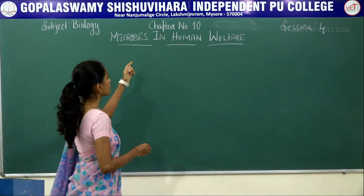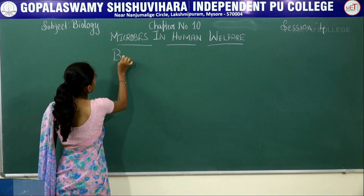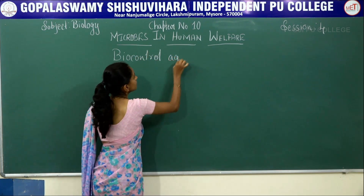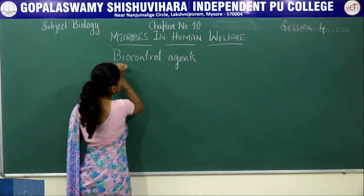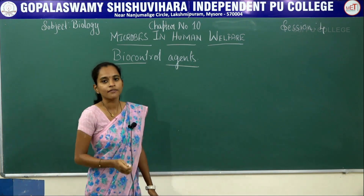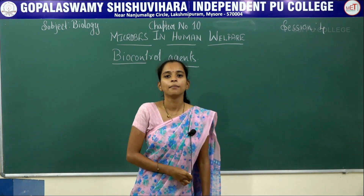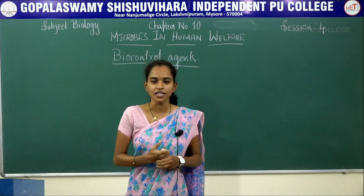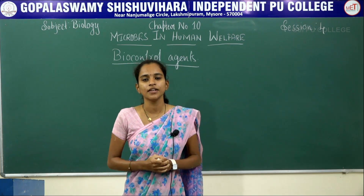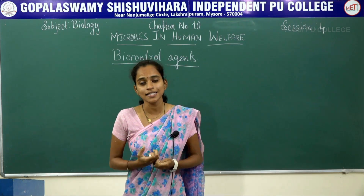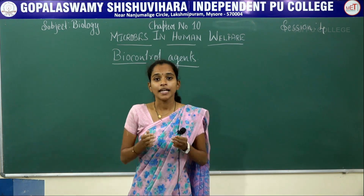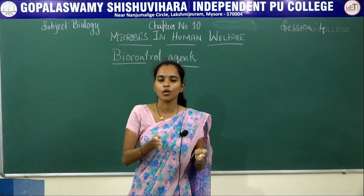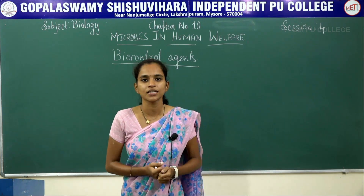Today we will be learning how microbes can be used as a biocontrol agent. So what do you mean by biocontrol? Biocontrol means using microbes for our own benefit, especially in the agricultural field, to control diseases as well as pests or insects. Initially the traditional method had no such ways and crops would be damaged by different pests or insects.